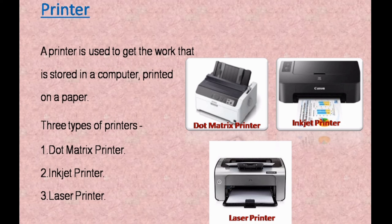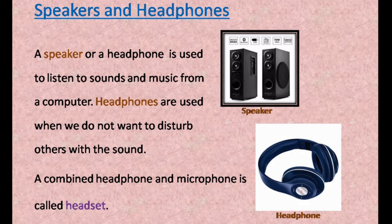Whatever you can see on the monitor — any picture — is called a soft copy. Another output device is the speaker and headphones. Speakers and headphones are used to listen to sounds and music from a computer. Headphones are used when we do not want to disturb others with the sound. A combined headphone and microphone is called a headset. Today, I hope all of you have understood the lesson. Thank you.